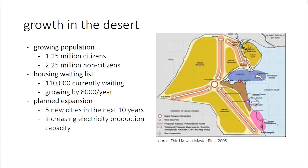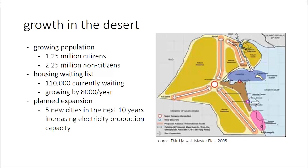Kuwait is experiencing rapid population growth. The current population is one and a quarter million citizens and additionally more than two million resident non-citizens. The government provides housing to all families. There is currently a waiting list of 110,000 families for housing, and this list is growing by 8,000 families per year. In part to accommodate this, the government plans to create five new cities within the next ten years.